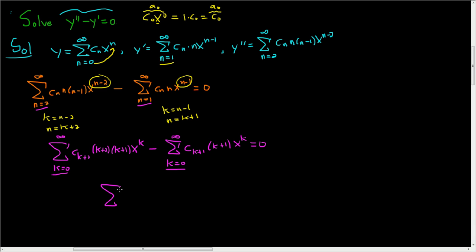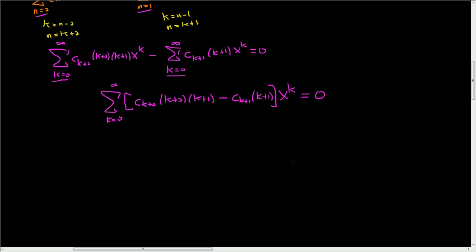Now we can combine everything into one sum from k equals zero to infinity. Inside the brackets: c sub (k+2) times (k+2) times (k+1) minus c sub (k+1) times (k+1), all multiplied by x to the k, equals zero. Since two polynomials are equal only when their coefficients match, we set each bracket equal to zero.